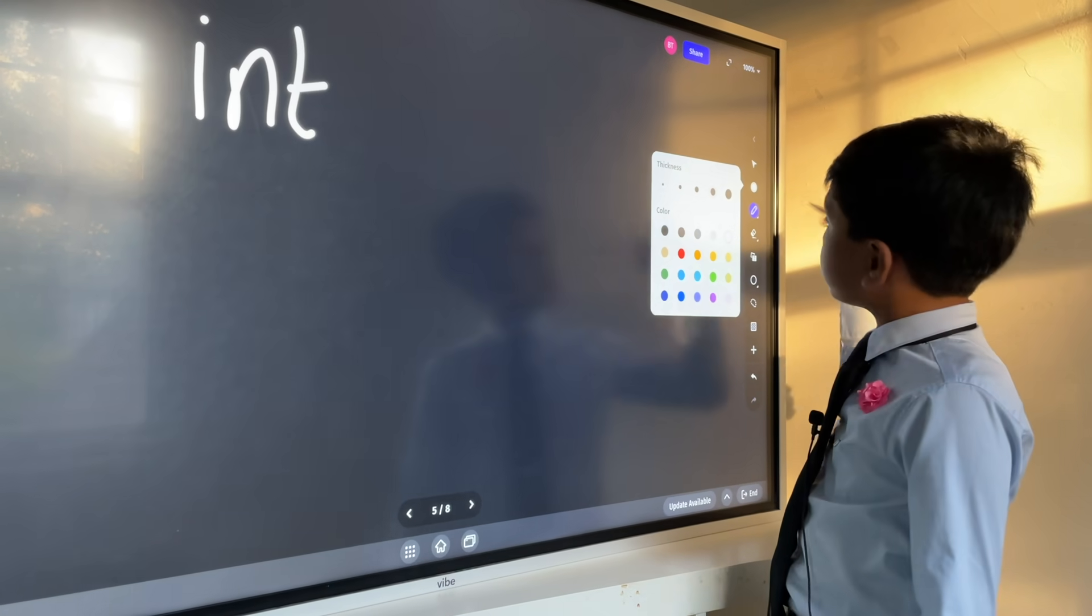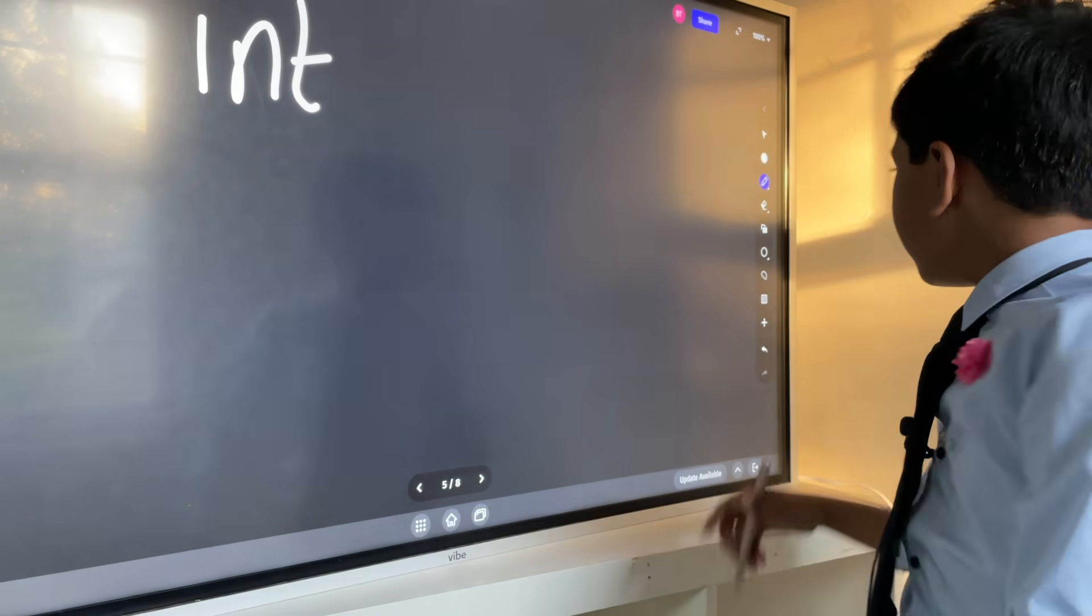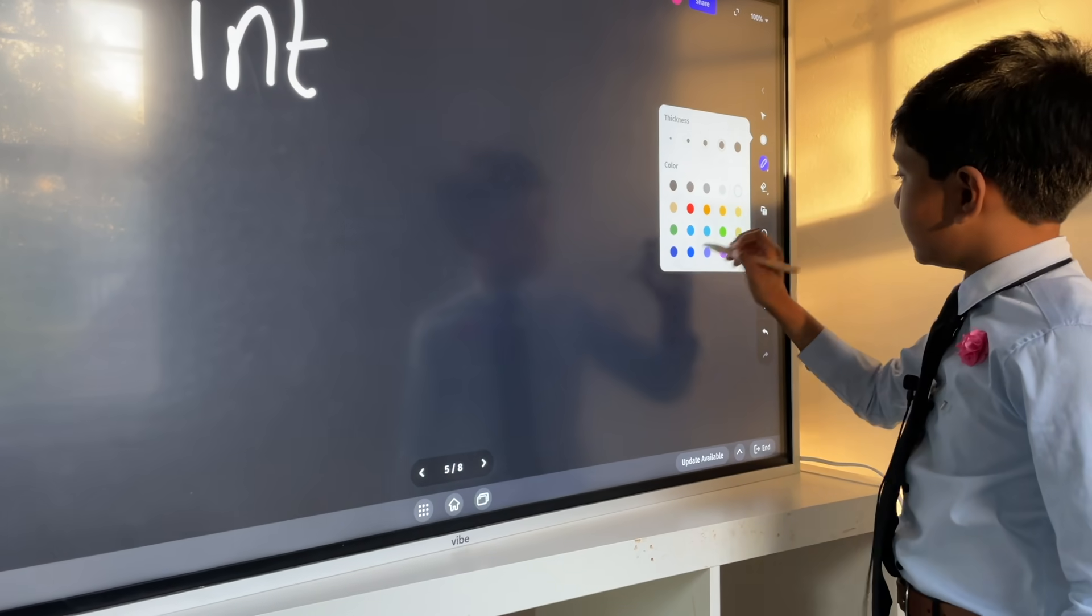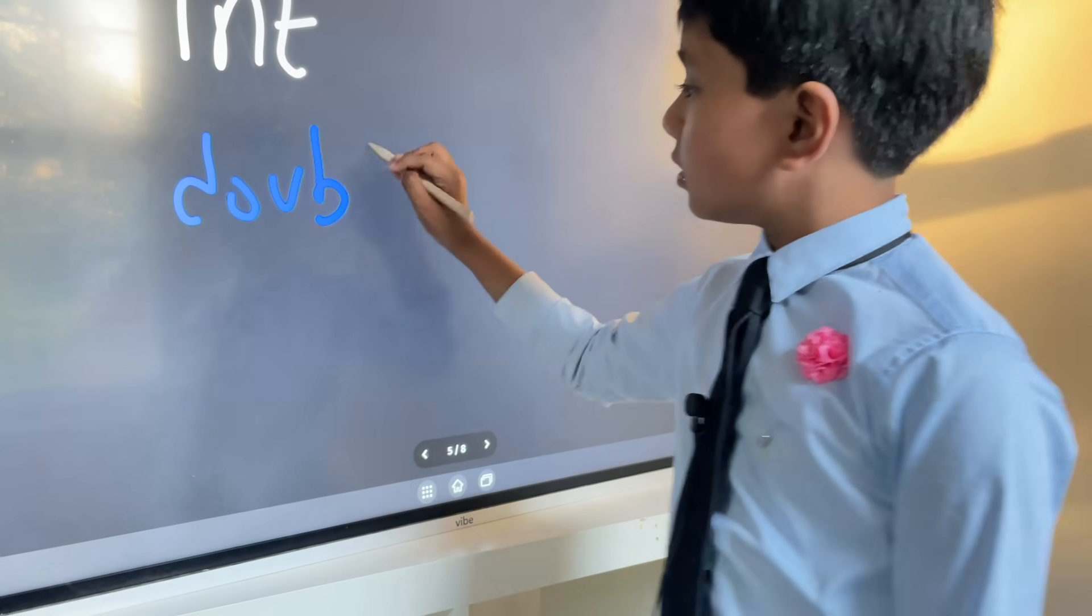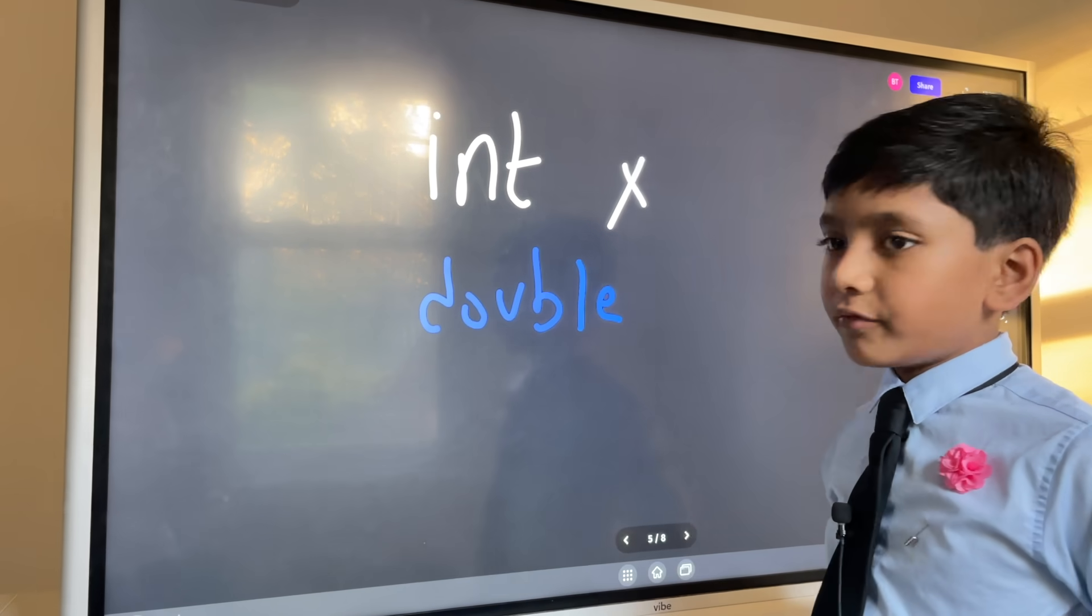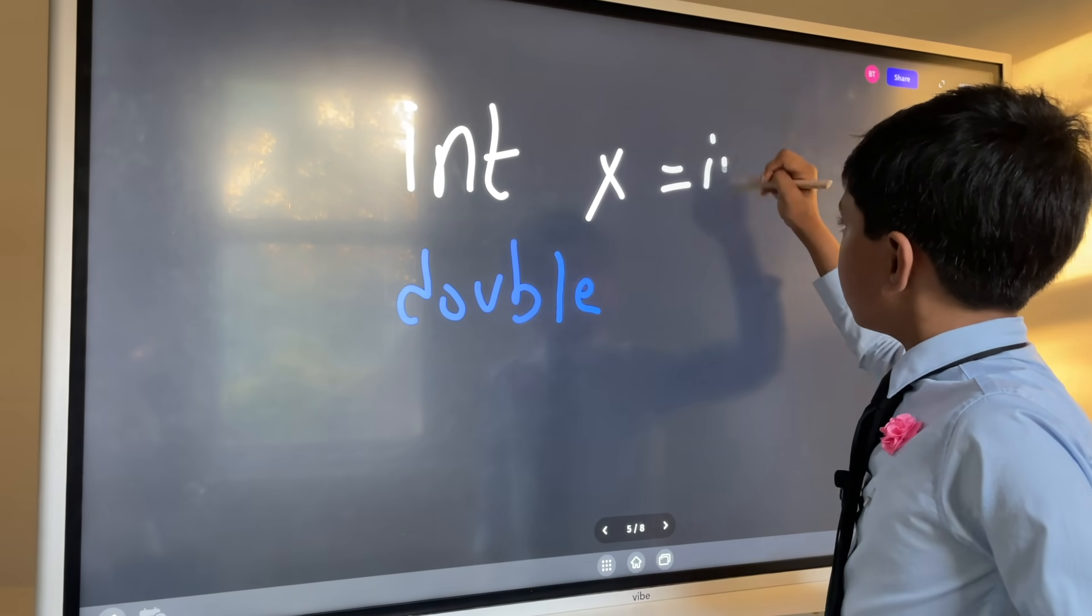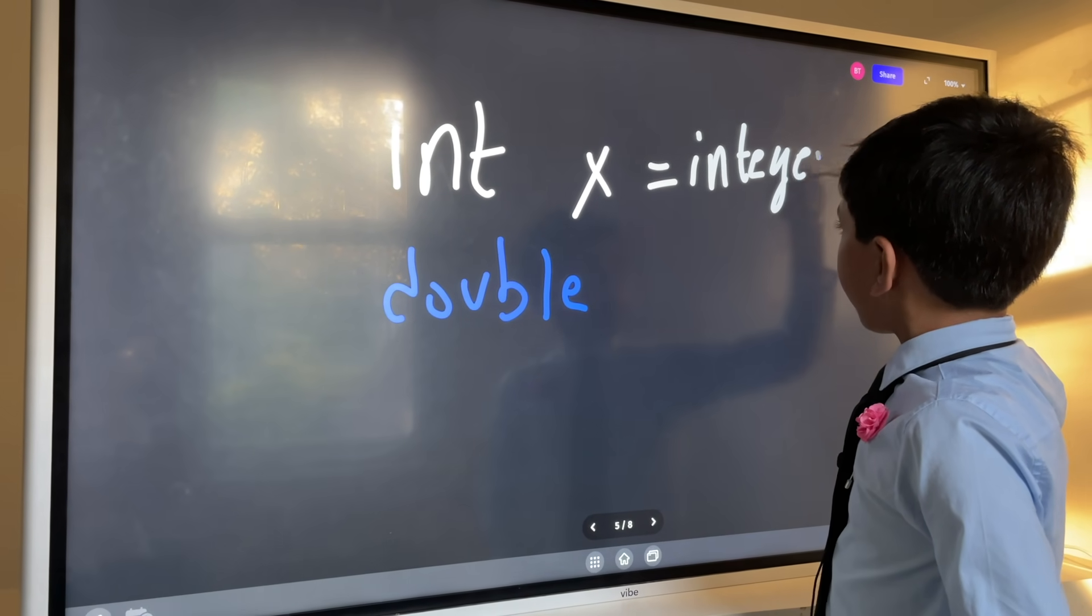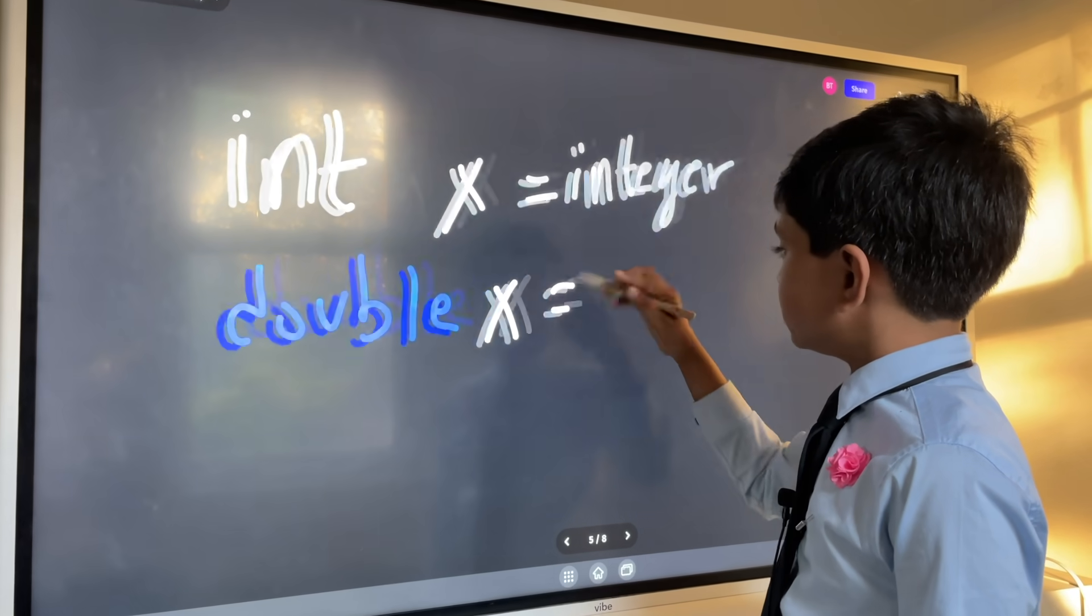But if you do want decimals, although imprecise, then double will be your best friend. int only allows the variable to be an integer, and double allows it to be anything in extremes.